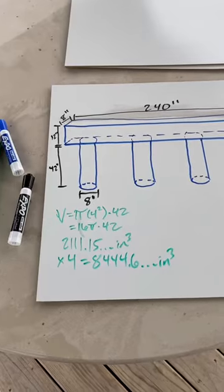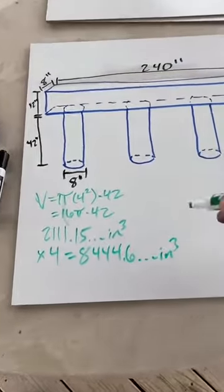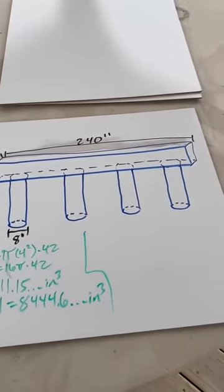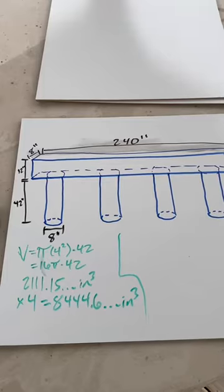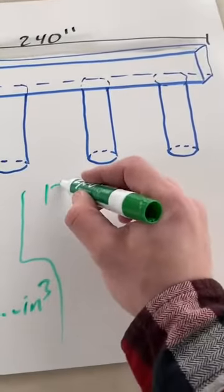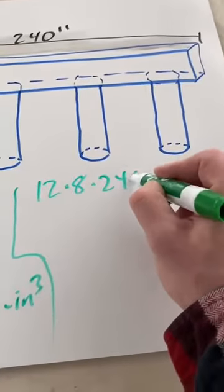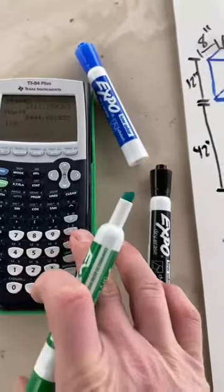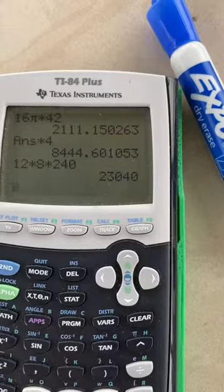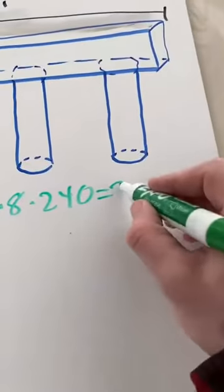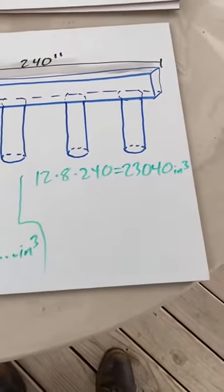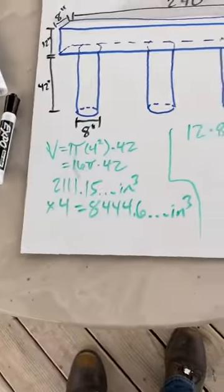Now I got to figure out that beam, right? So how do I find the volume of a rectangular prism? That's what we've got going on there. Well, that's just going to be length times width times height. So I can do 12 times 8 times 240. Let's see what we get. 12 times 8 times 240. And that's going to give me 23,040. That's inches cubed. So we're getting somewhere.